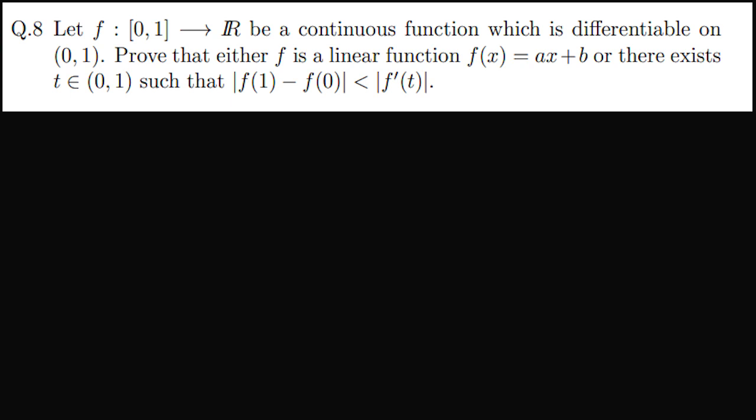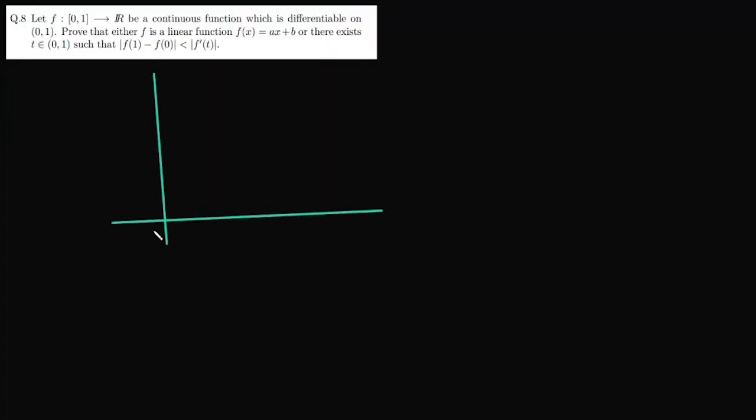So let us draw the axis. Now this function is defined between 0 and 1. Without loss of generality, let us assume f(0) is less than or equal to f(1). So let us say this is f(0), and this point is f(1). Now we join these two points.